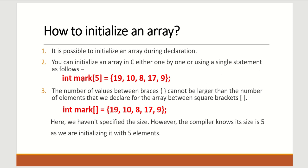We have data type integer, the name of the array is 'mark', the size is 5, and then we are not writing a semicolon yet because we are also initializing. After that, it will be an equal-to sign. It can hold only 5 integer values, so we are initializing 5 different values in the curly brackets: 19, 10, 8, 17, and 9, then close curly bracket and semicolon.